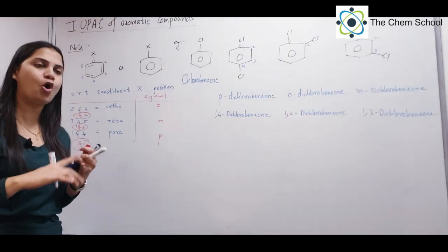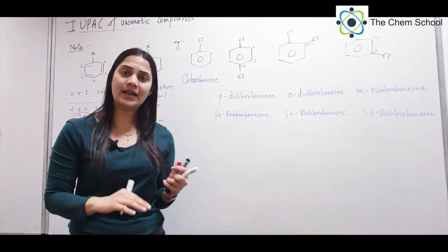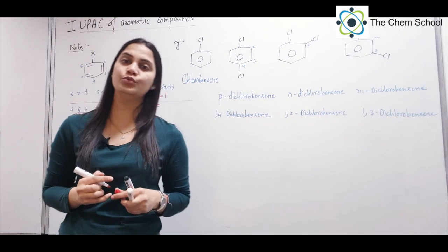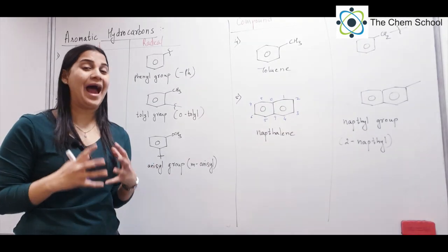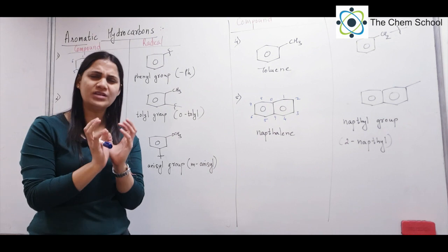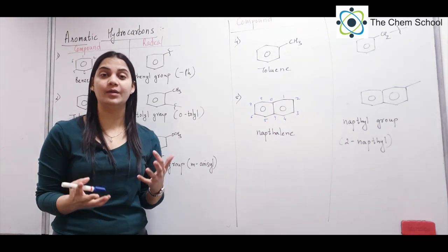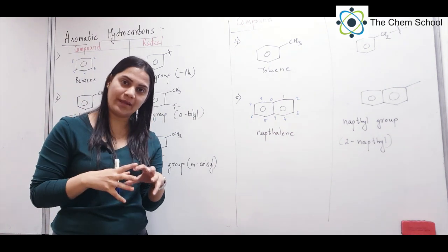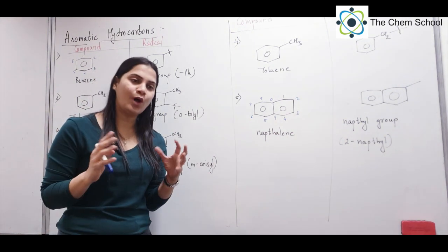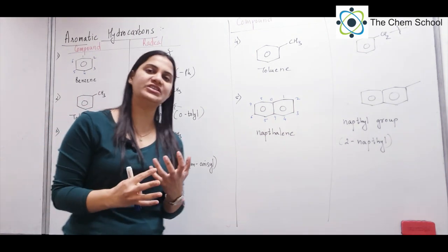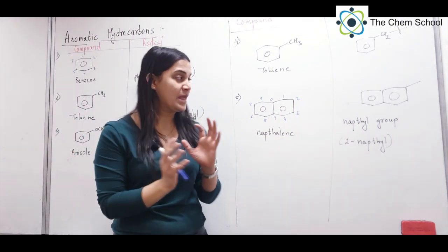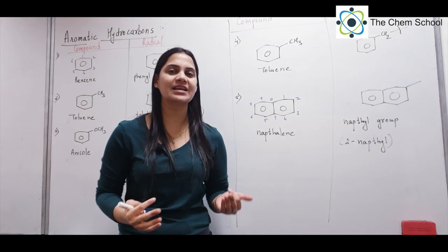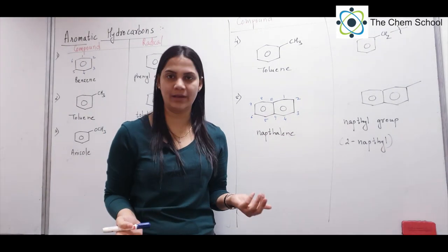I hope ortho, meta, and para are very clear to you now. If not, you can always use the numbering when writing nomenclature. Now when we talk about aromatic hydrocarbons, there are many names you must learn by heart — there is no alternative. You have to memorize these names. Today I will give you all these structures with their names, and then in the next class we will do IUPAC nomenclature in more detail.